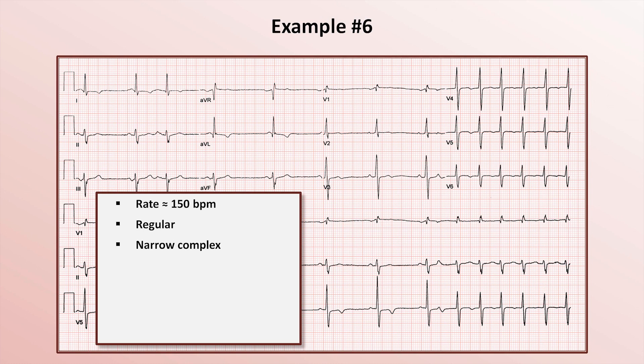During the tachyarrhythmia, there are no visible P-waves at all, so we can't say anything about AV dissociation — though it would be phenomenally rare to see AV dissociation with narrow complexes.